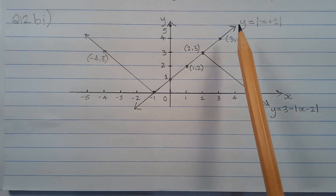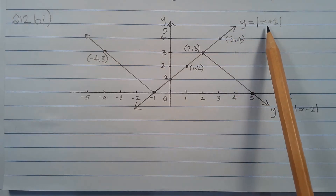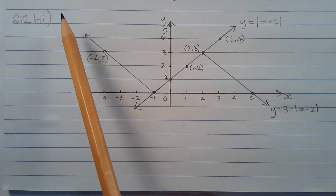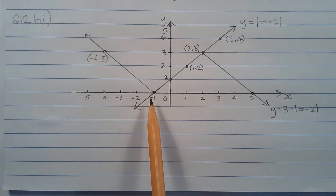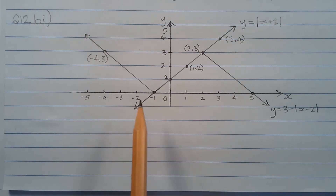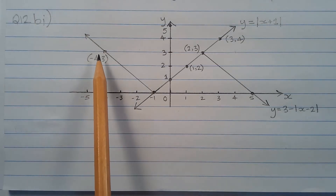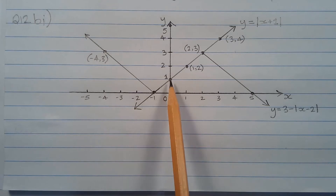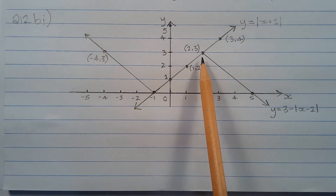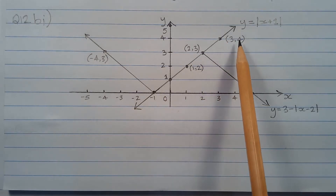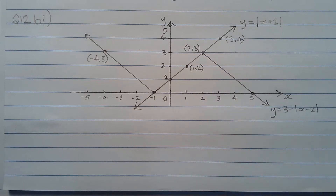The graph of y equals the absolute value of x plus 1 is a right-way-up v-shape with vertex at x equals negative 1, passing through the point negative 4 comma 3, y-intercept of 1, and passing through the points 1 comma 2, 2 comma 3, 3 comma 4, and so on.